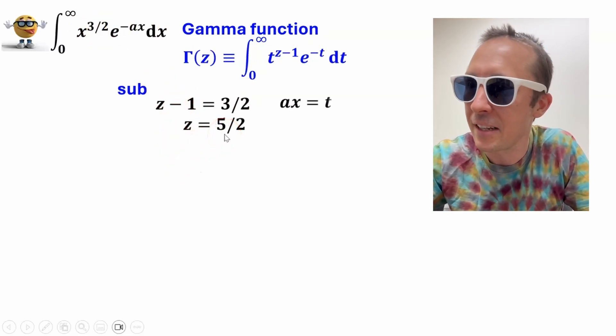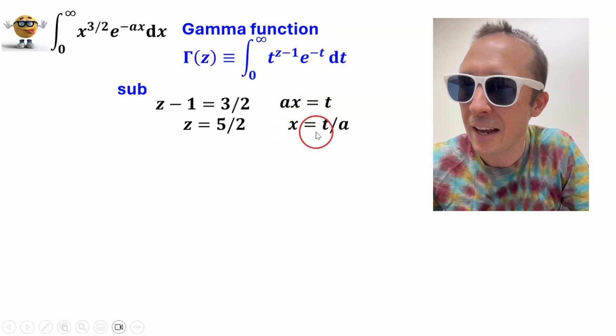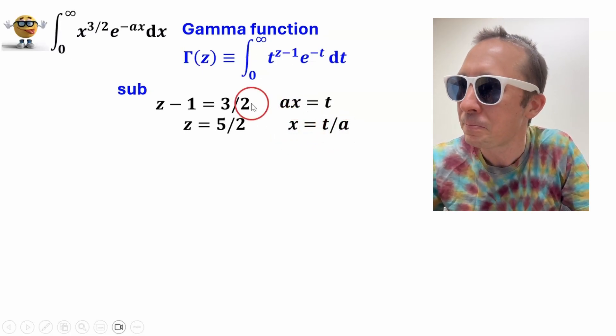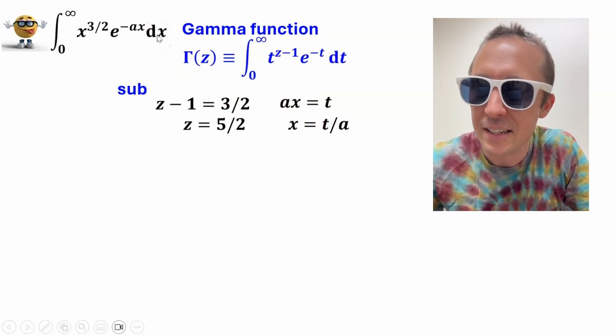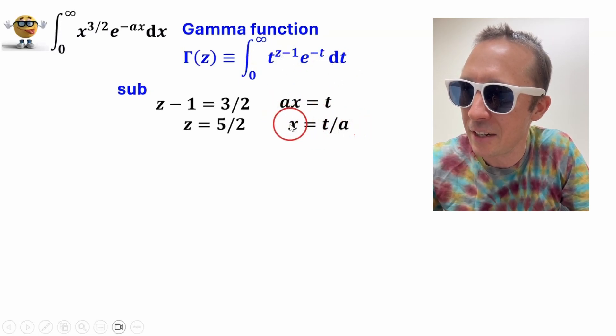and then if we look at the other exponent, this ax right here equals t for the gamma function, so ax equals t, and if we divide by a, x equals t over a. Now our integral has a dx here, and the gamma function has a dt,